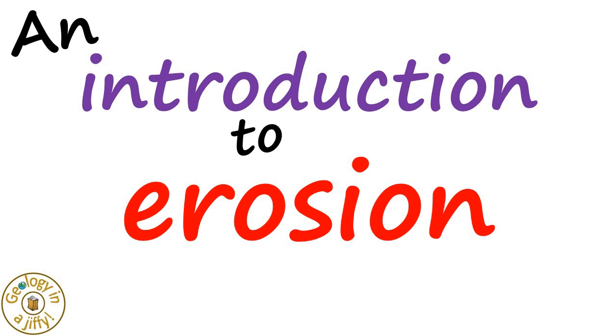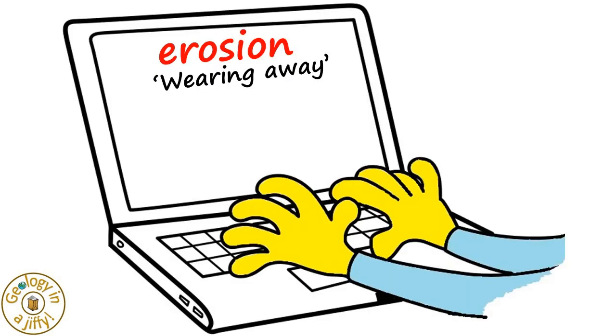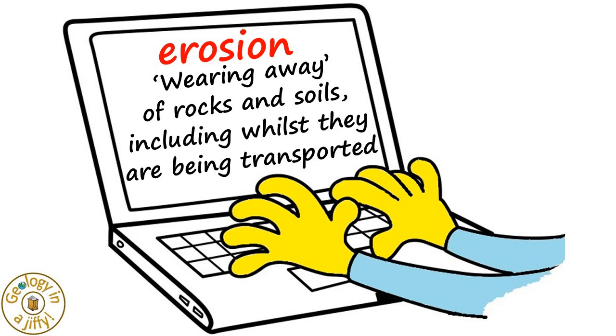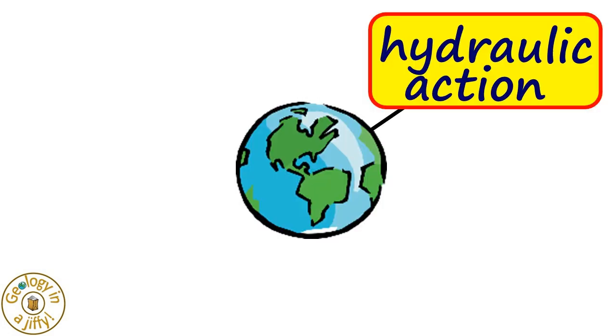An introduction to erosion. Erosion is the wearing away of rocks and soil, including whilst they are being transported. There are four erosive processes, the first being hydraulic action.